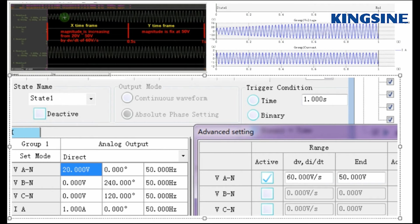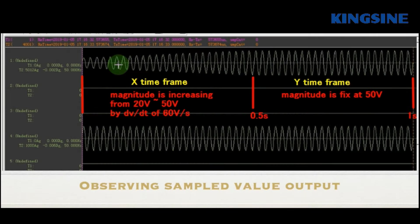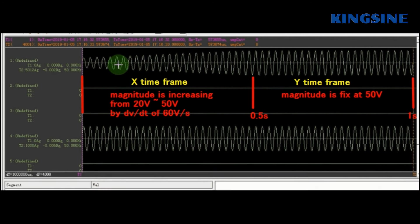If we observe the sampling value output in frame width, we will notice that magnitude of voltage signal is increasing from 20 to 36 V in 0.5 seconds, with DV by DT of 16 V per second. Our test time is of 1 second. Hence, the 36 V constant signal is generated for next 0.5 seconds. It's clearly visible in frame width.